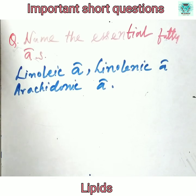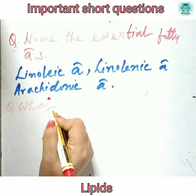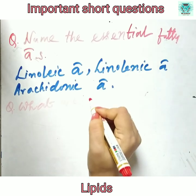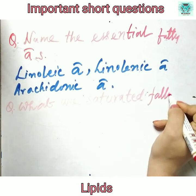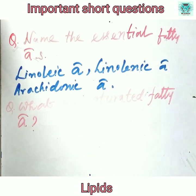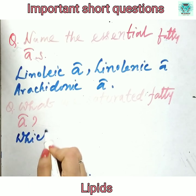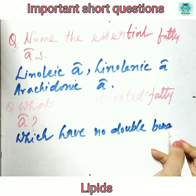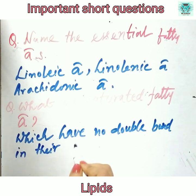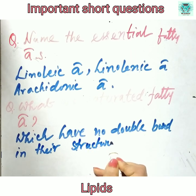Next question: what are saturated fatty acids? Saturated fatty acids are those which have no double bonds in their structure. These are called saturated fatty acids.